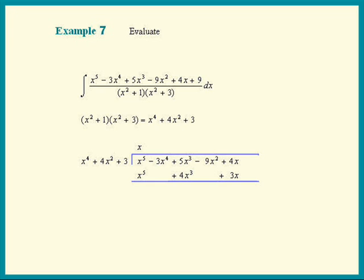The x to the 5th drop out, we get negative 3x to the 4th plus x cubed minus 9x squared plus x.